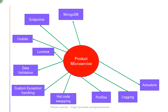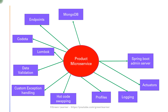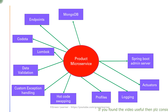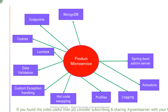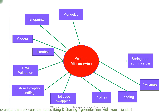Then we saw the actuators to monitor health, info, and other important information. After that we saw the Spring Boot Admin Server, which has a dedicated couple of videos. We jumped from Product Microservice specifically to Spring Boot Admin Server to cover lots of things. We saw the dashboard, used Product Microservice as a client to the Spring Boot Admin Server, and saw what all the Spring Boot Admin Server can provide to help us monitor our services.